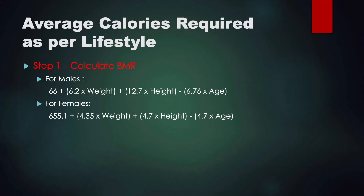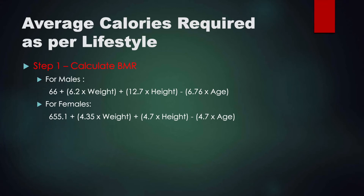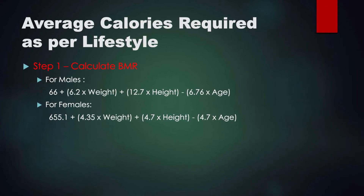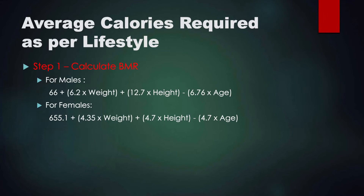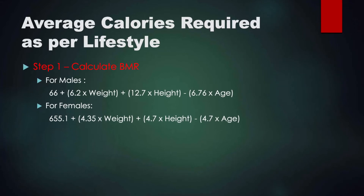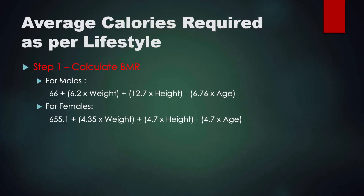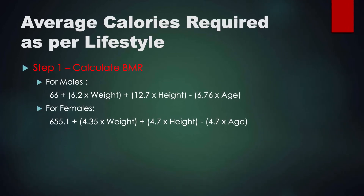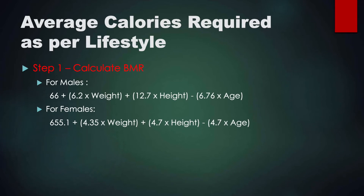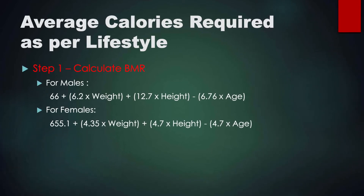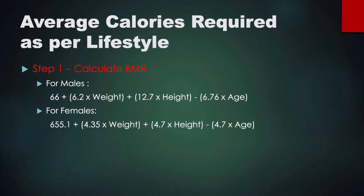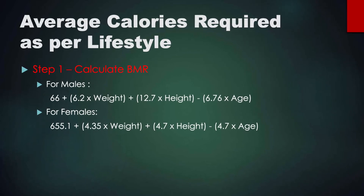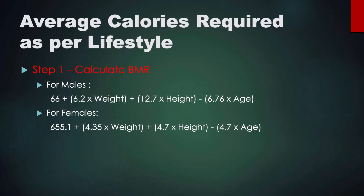What is the average calorie requirement of an individual as per their lifestyle? For that, we have three basic steps of calculation. The first is to calculate the BMR — Basal Metabolic Rate. Even if we are sleeping throughout the day, a certain amount of energy is consumed by our body to maintain routine functioning. That is called BMR, and it differs for males and females.